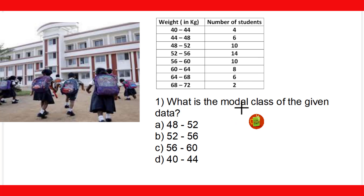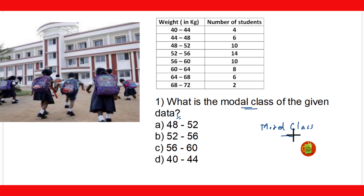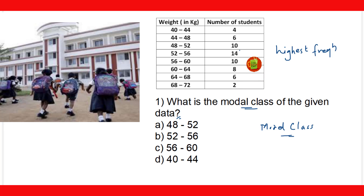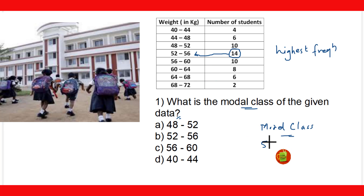The first question asks: what is the modal class of the given data? The class corresponding to the highest frequency is called the modal class. Here, the number of students is the frequency, and the highest frequency is 14. Its corresponding class is 52–56. Therefore, the modal class is 52–56, and option B is the correct answer.